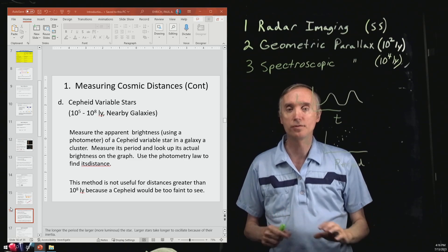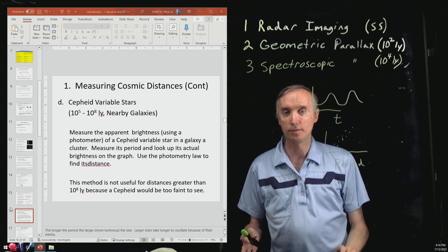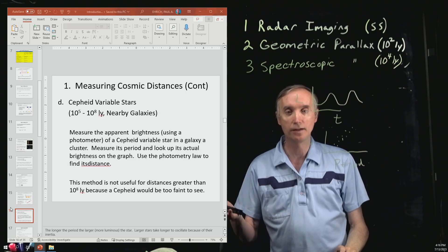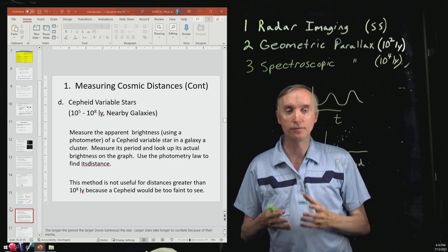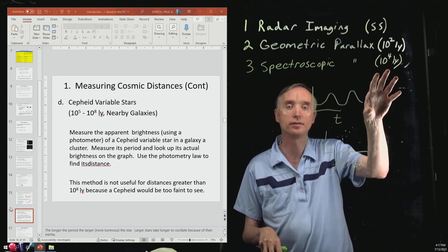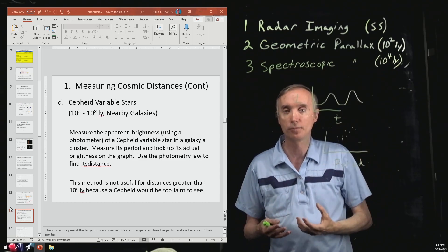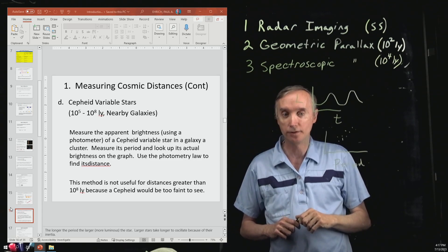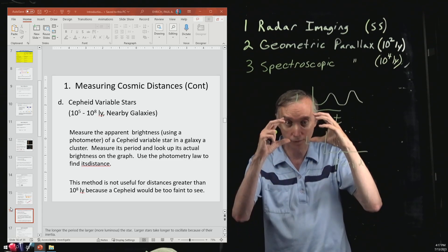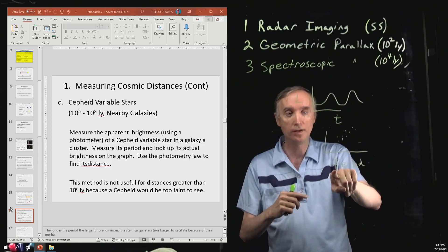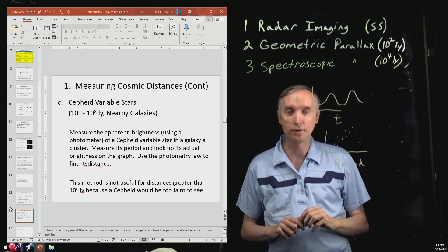Now we're going to measure the apparent brightness using a photometer of a Cepheid variable star in some galaxy cluster. So it's going to be a Cepheid variable that is further away than 10,000 light years. We're going to measure its apparent brightness using the photometer. We're going to measure its period because we can look at it through our telescope and we can see it getting brighter, dimmer, brighter, and dimmer.